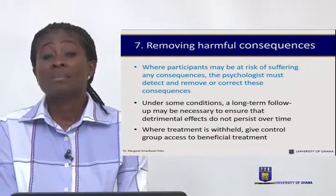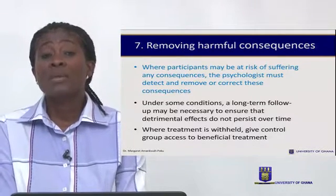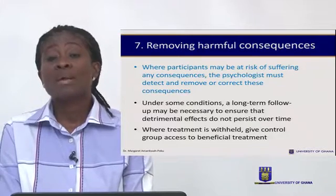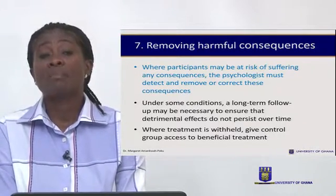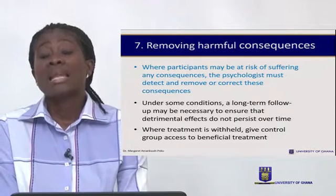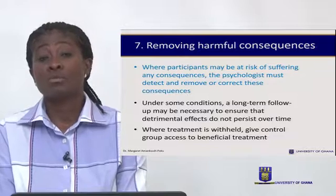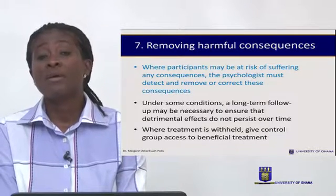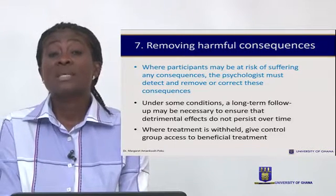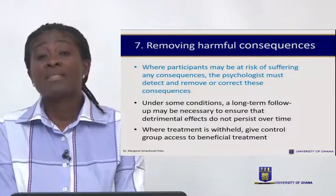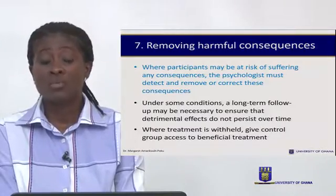For example, if we run a stress management program with an experimental group and a control group, and we notice that for the group of hypertensives who had the stress management program it improved their blood pressure levels, at the end of the study we have to go back and give the same stress management to the control group so that they will also benefit from this positive treatment. This brings us to the end of the ethical guidelines for the use of human participants in research.